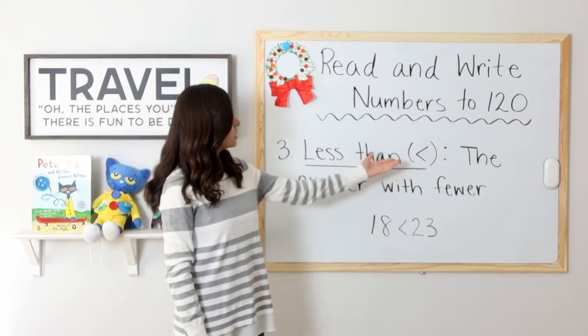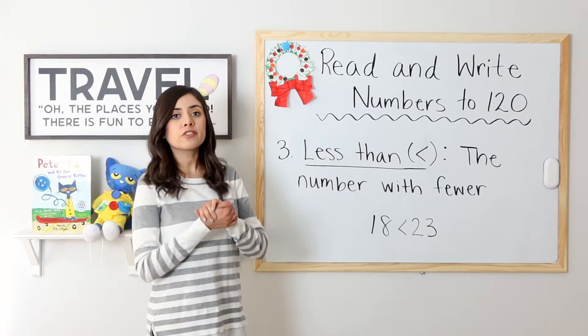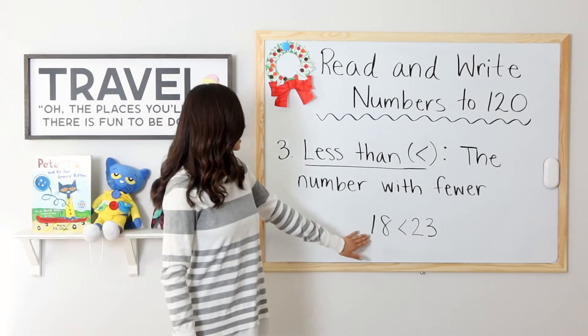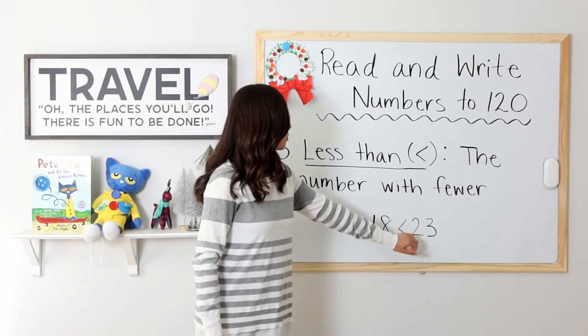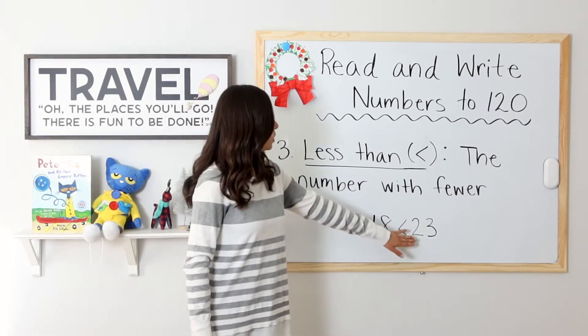Less than. Here is the symbol for less than. Less than refers to the number with fewer. 18 is less than 23. 18 has fewer than 23.